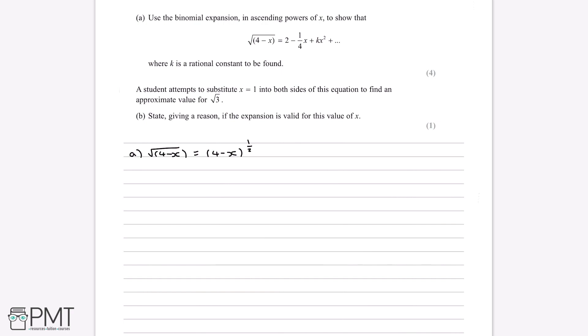Now secondly, when we're doing binomial expansion, we need things to be in the form of 1 plus x to the power of n. And you can see we have the x and we have an n, but we need this 1 to be there. And at the moment, in its place, we have a 4.